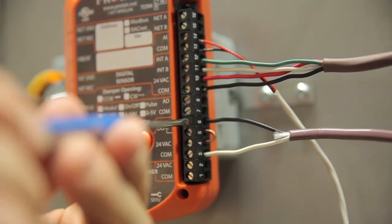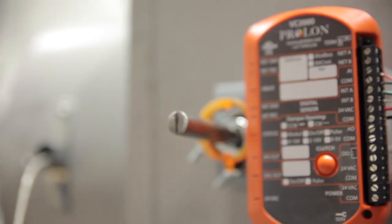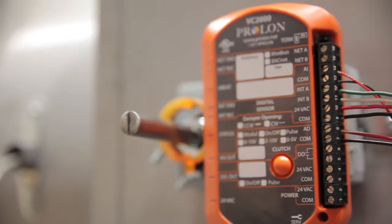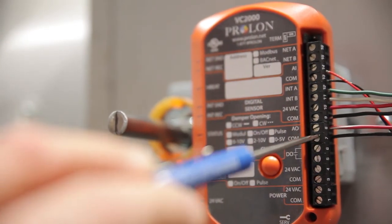Finally, if your equipment requires a modulating 0 to 10 VDC signal, connect it on the VC2000's analog output on terminals 7 and 8.